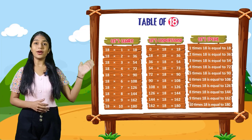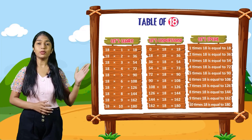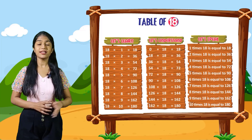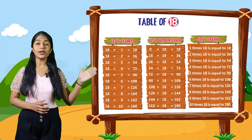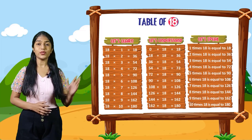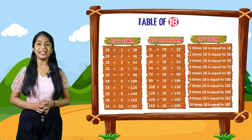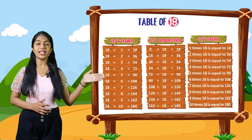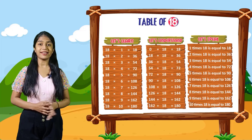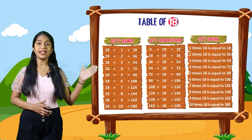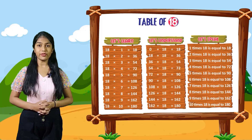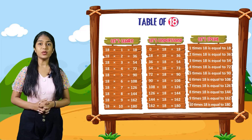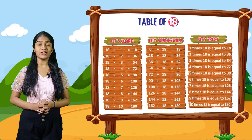So now let's speak. You have to speak out with me. 1 times 18 is equal to 18. 2 times 18 is equal to 36. 3 times 18 is equal to 54. 4 times 18 is equal to 72. 5 times 18 is equal to 90. 6 times 18 is equal to 108. 7 times 18 is equal to 126. 8 times 18 is equal to 144. 9 times 18 is equal to 162. 10 times 18 is equal to 180.